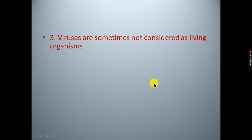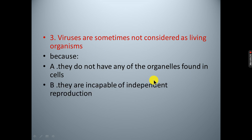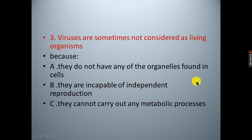Third question: Viruses are sometimes not considered as living organisms because: A. They do not have any of the organisms found in cells. B. They are incapable of independent reproduction. C. They cannot carry out any metabolic process. D. All of the above. The correct answer is D.